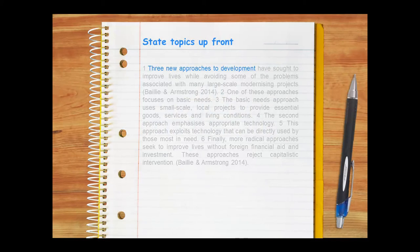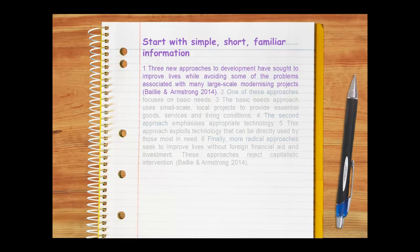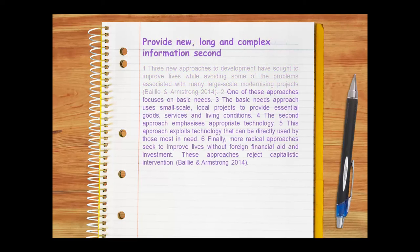If we look at paragraph structure, we can see that it begins by stating topics up front, then develops those topics in the remainder of the paragraph. The paragraph begins with simple, short, familiar information and concepts, which are followed by new, long, complex information and ideas. This movement from simple, short, familiar information to new, long, complex information helps the reader prepare for what comes next and greatly assists cohesion.